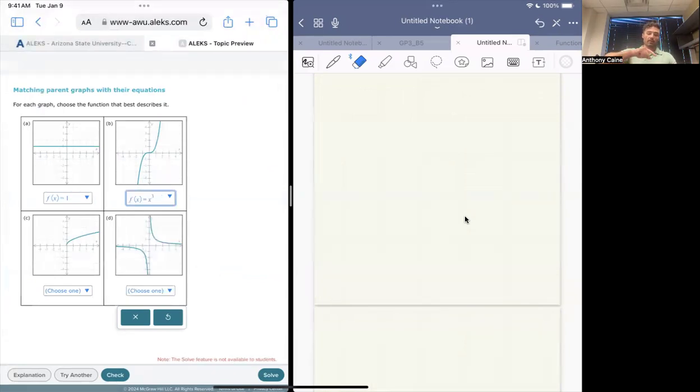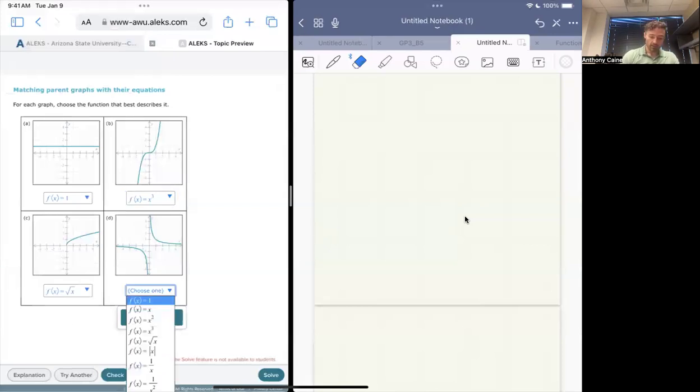So cubics, they are either a lazy N or you reflect it and they're sort of a lazy N going downhill. And right here, this is what a square root looks like. And right here, this is like a one over x.